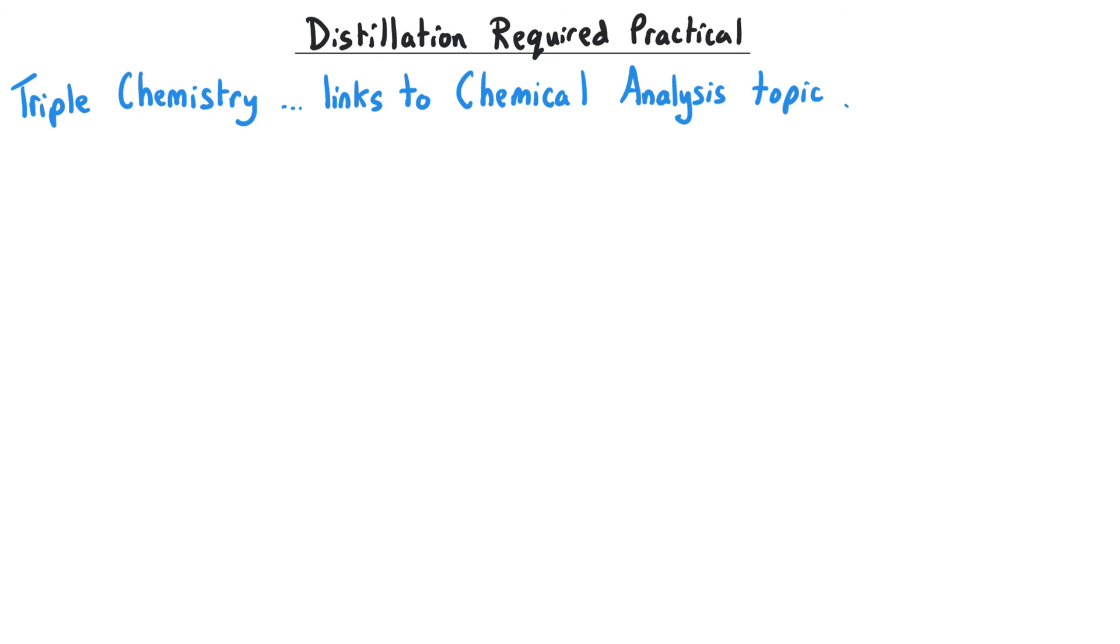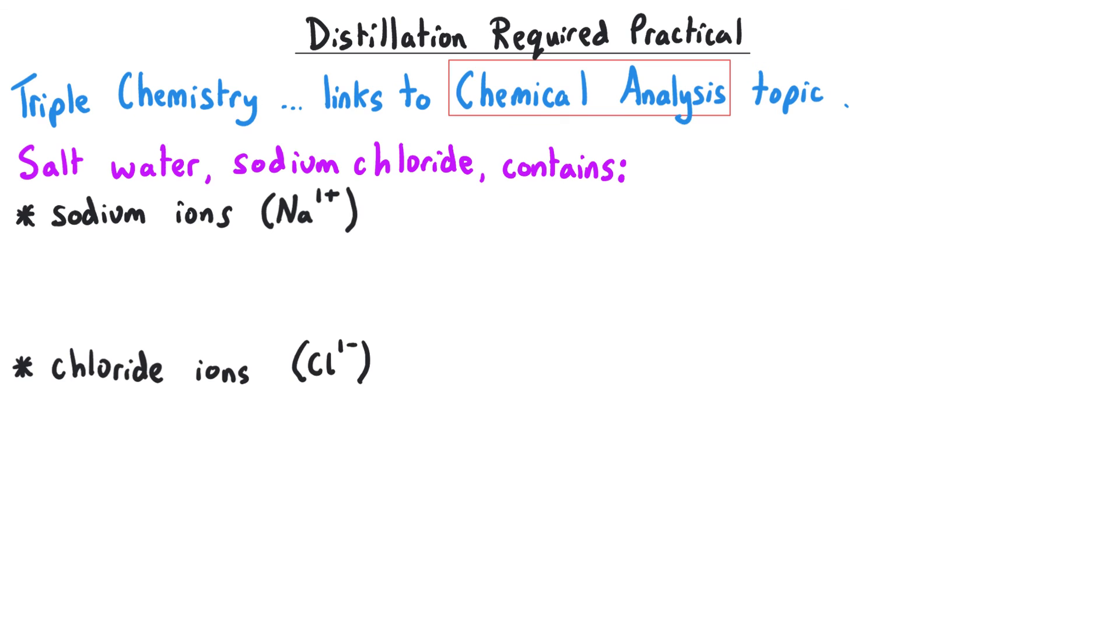For people studying triple chemistry, the distillation required practical also has links to the chemical analysis topic. Salt water contains sodium chloride, which contains two ions: sodium ions Na+ and chloride ions Cl-. You could be asked to test the salt water for these ions before it is distilled and then test the distilled water after you have distilled it.